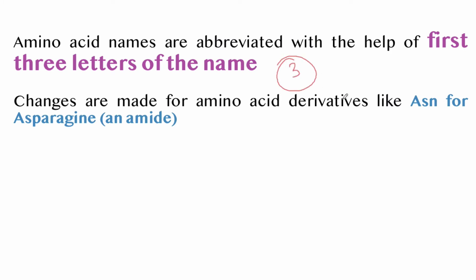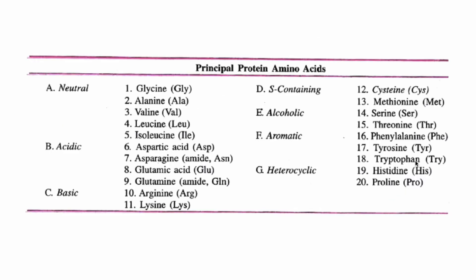Amino acid names are abbreviated with the first three letters of the name, with changes made for amino acid derivatives. For example, asparagine is ASN (not ASP). Other examples: glycine is GLY, alanine is ALA, valine is VAL, leucine is LEU, and isoleucine (being a modified form) is ILE.